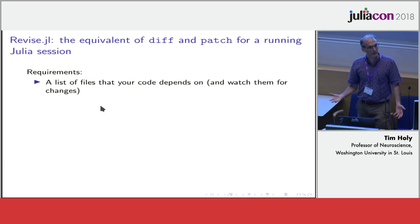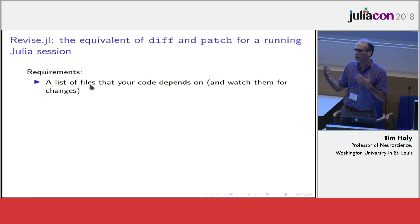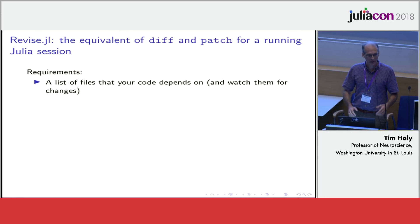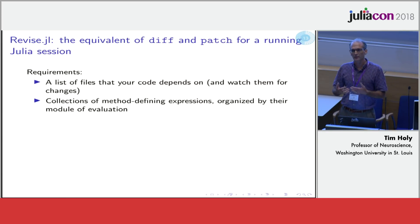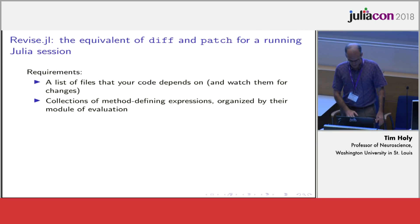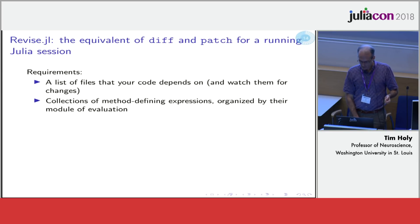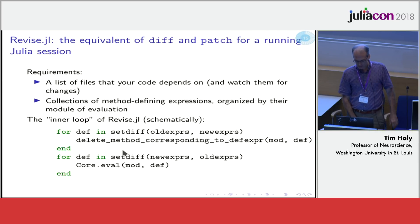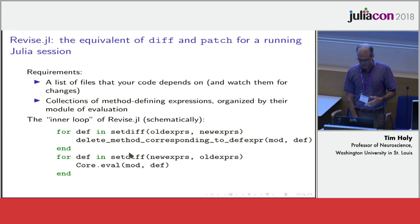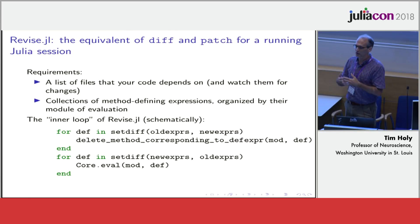Revise is actually quite simple. It only needs a couple of things: a list of the files your running code depends upon and the ability to watch them for changes, plus a well-organized set of the expressions that get defined as a consequence of those packages. Well-organized means knowing which module to evaluate every expression in, and being able to compare expressions. Schematically, it's simple: if you have all expressions in the old version and all in the new version, for anything in the old one but not the new one you delete it, and for anything in the new one but not the old one you evaluate it to define it. A really simple way of updating your current running Julia session.